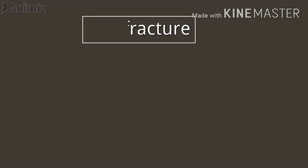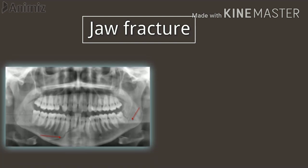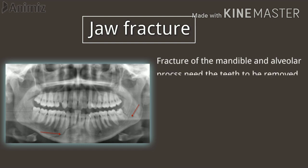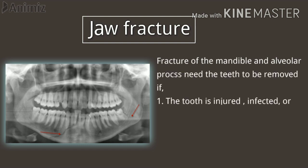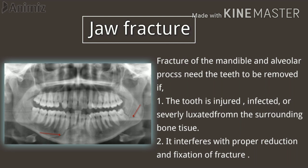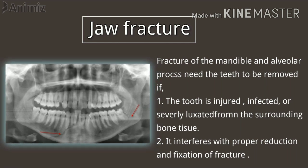Jaw fracture — fracture of the mandible and alveolar processes — requires teeth to be removed in two cases: if the tooth is injured, cracked, infected, or severely luxated from the surrounding bone and tissues, or if it interferes with proper reduction and fixation of the fracture. Such teeth should be removed.